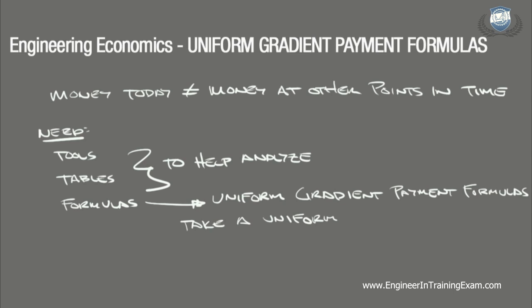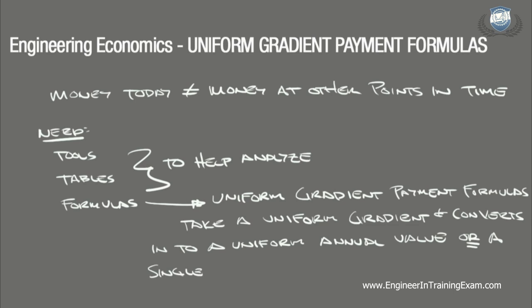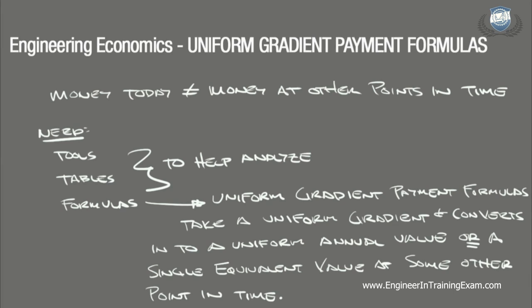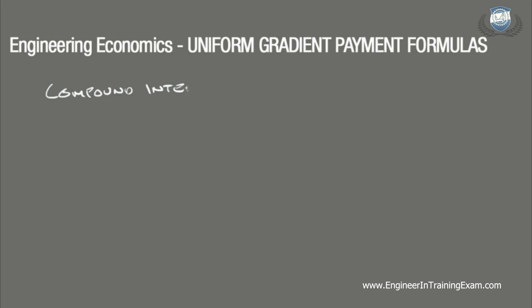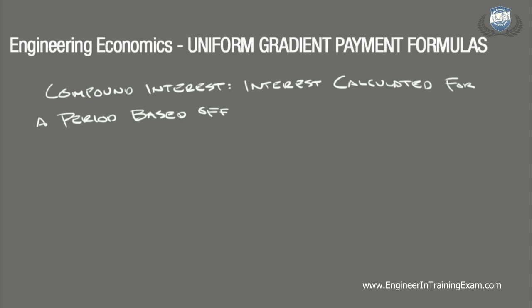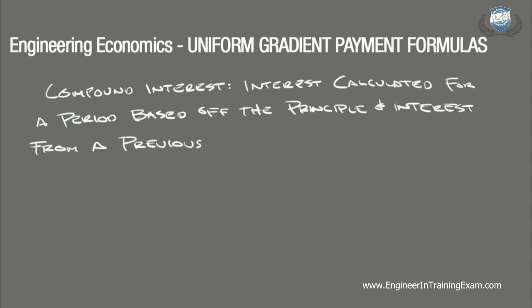These formulas take a uniform gradient series, which is a cash flow either increasing or decreasing by a fixed amount over a period of time, and convert it into either a uniform annual value or a single equivalent value at some other point in time. Uniform gradient series are always increasing or decreasing by a fixed amount and are denoted with a G. We are concerned with compound interest specifically, which is the interest for a period calculated off the principal and interest from a previous period.